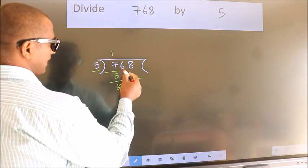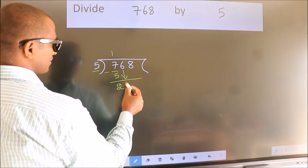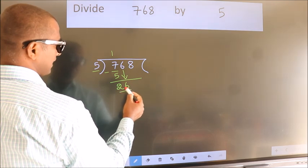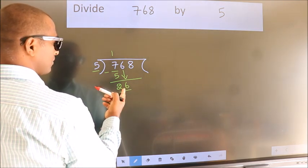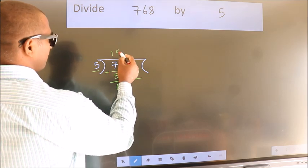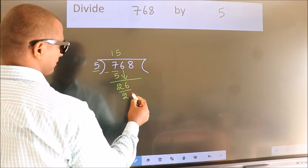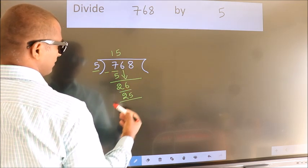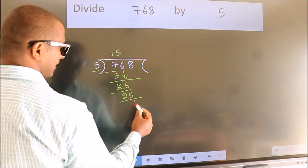After this, bring down the beside number. So, 6 down, making 26. A number close to 26 in the 5 table is 5 fives, 25. Now we subtract. We get 1.